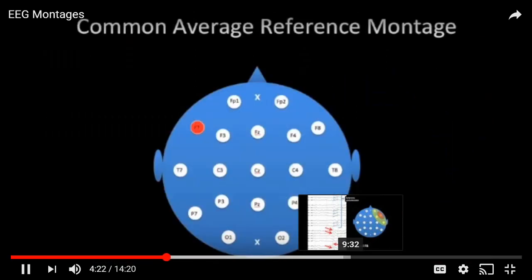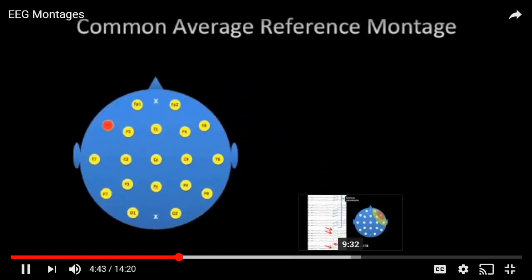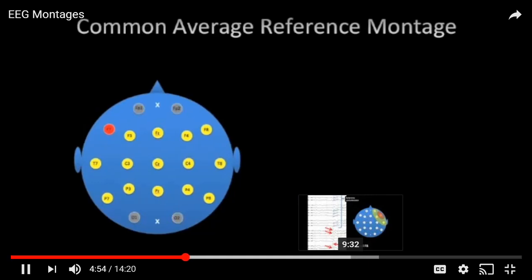The next type is the common average reference montage, where we compare the signal at each position to the average of the rest of the head. For F7, we compare it to the signal everywhere else divided by the number of electrodes. However, FP1 and FP2 are excluded because they are susceptible to eye movement artifact, and O1 and O2 are excluded due to head movement artifact, so we compare each electrode to a smaller sample of all electrodes.